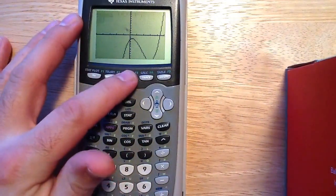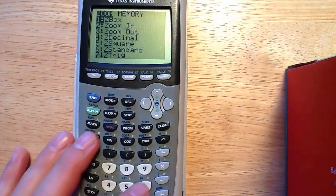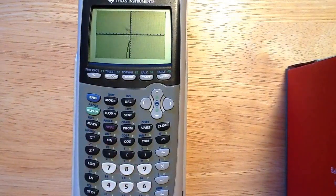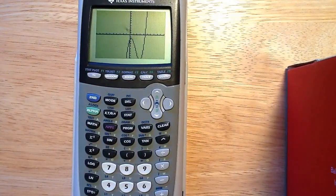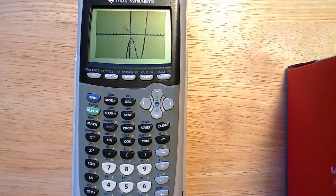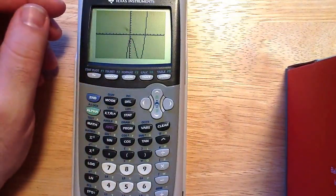Now a lot of times if you just press zoom and go to 6, that's your standard window. It's going to show you from negative 10 to 10 both x and y. And again, I don't get down as low as I need to.